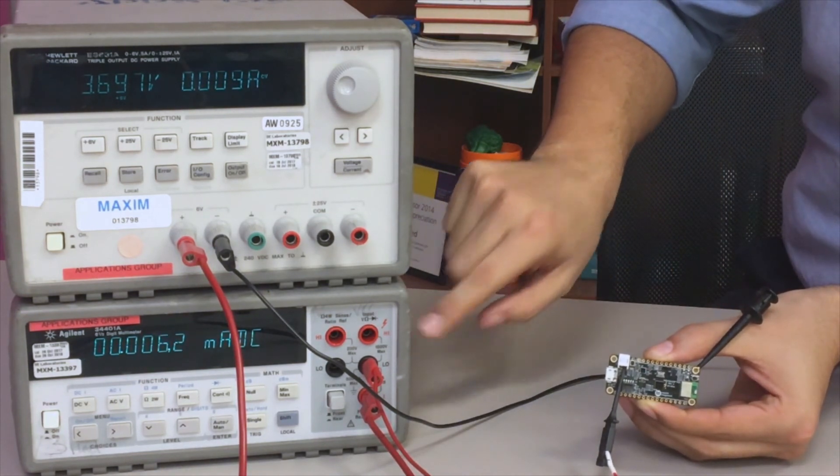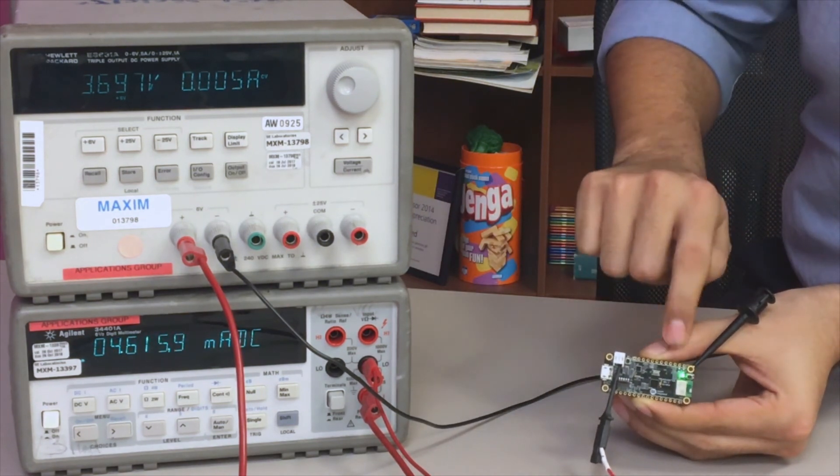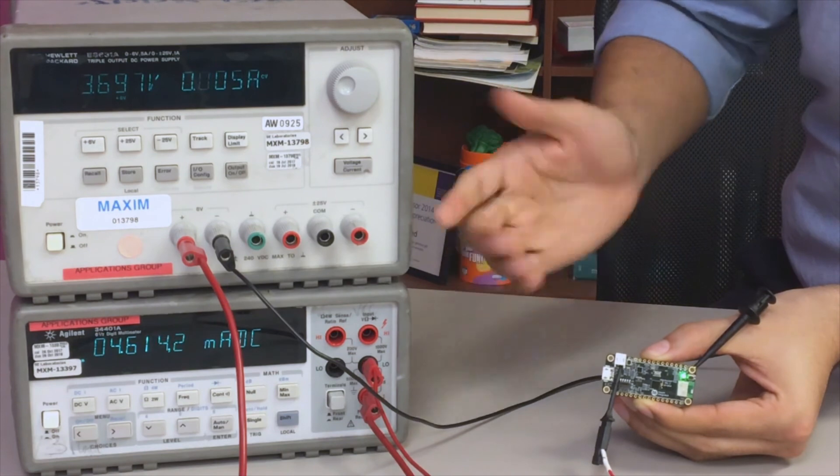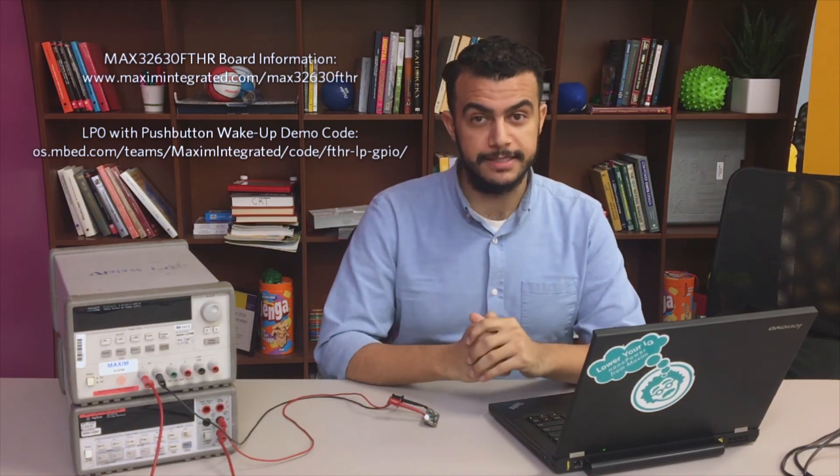Now if I press the button again, you'll see those red blinks showing it powered up from low power mode and returns back to about 4.6 milliamps. That's all there is to it. In under five minutes, I was able to show how to put the MAX32630 microcontroller into deep sleep mode with the push of a button and then wake it up with the push of that same button.